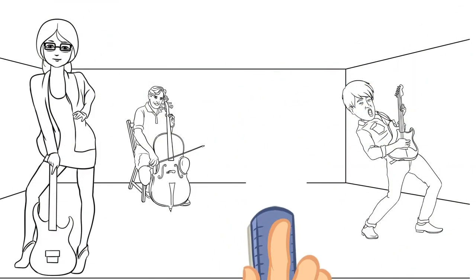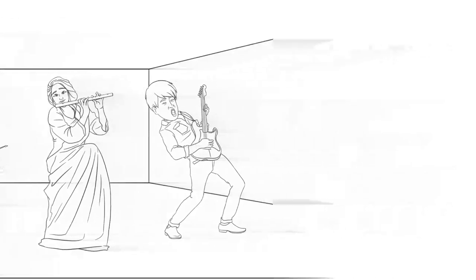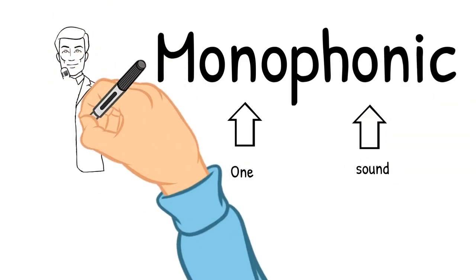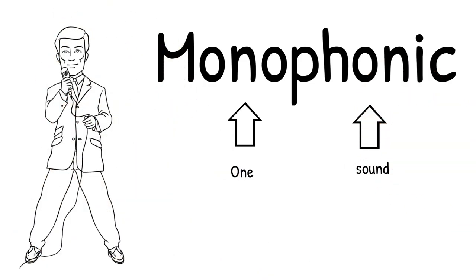The terms that we use are made of two parts. For example, monophonic. Mono just means one, and phonic means sound. So monophonic music has one sound.